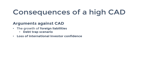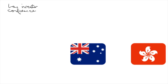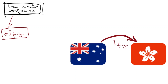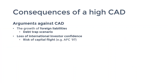Put yourself in the shoes of a lender or investor. If you've invested into a country that is recording high levels of debt, that's not going to instill a lot of confidence. Two common responses are: number one, withdraw your investments. If this response is widespread among foreign investors it leads to capital flight, which was the case in the 1997 Asian financial crisis. Capital flight is not only a leakage to the economy causing falling economic activity, it could also cause severe depreciations of the currency.